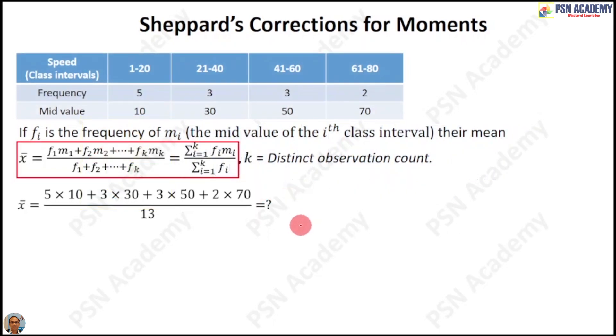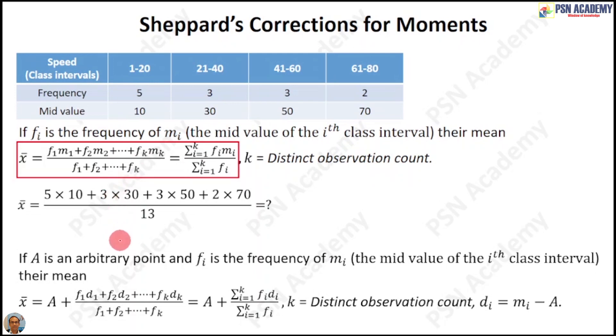Hi. In this video, we will learn about Sheppard's corrections for moments. Till now, whenever we dealt with class intervals, we considered mid-values. For arithmetic mean with class intervals, we multiply frequencies with the mid-value, such as F₁ times M₁ plus F₂ times M₂. When we have an arbitrary point A, we also deal with the mid-value of the class intervals.